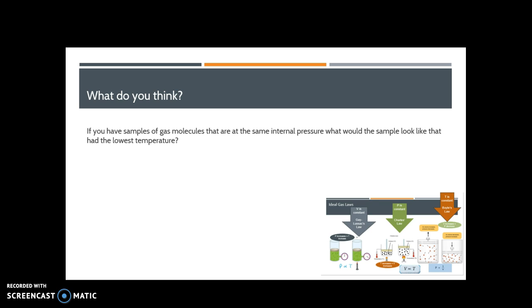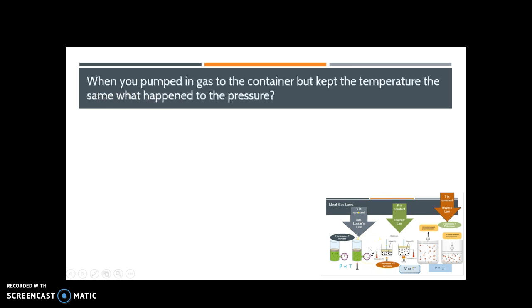So to help you prepare for that, think about what happens in certain situations. If you have samples of gas molecules that are at the same internal pressure, what would the sample look like when it had a lower temperature? So we'll go through and look at that. Think about which law that applies to. Remember, we had these ideal gas laws. We'll think about which one that would apply to. So if the pressure is constant and the temperature was low, which one would you use? And what would you use to help you determine what will happen?